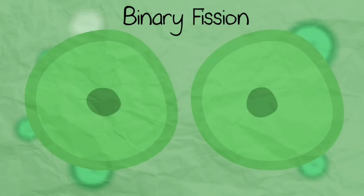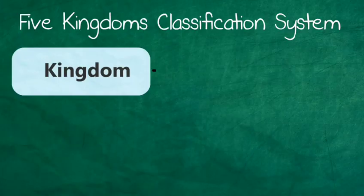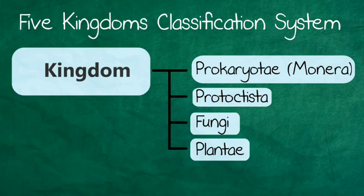So from this video, you should know kingdoms break down into 5 groups, based upon different characteristics, including whether they have cell walls, are eukaryotic or prokaryotic, and how they get nutrition.